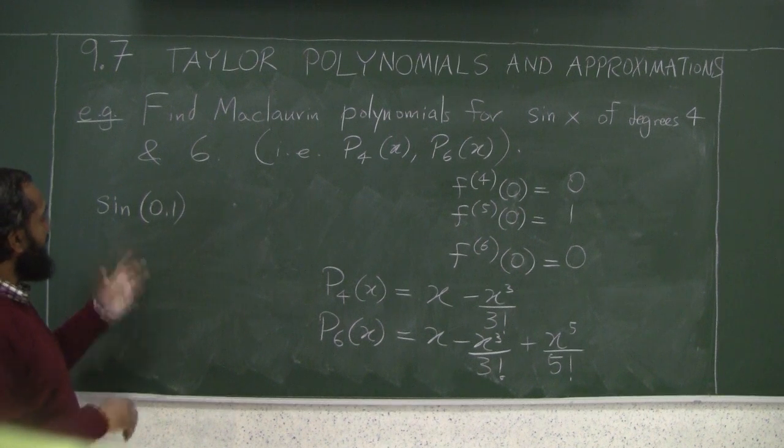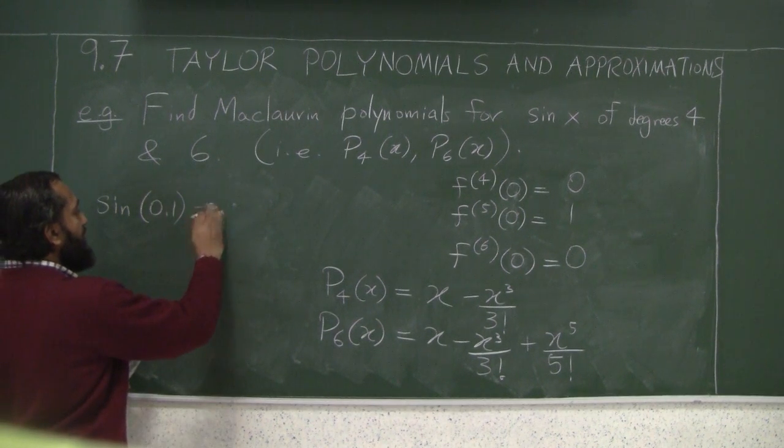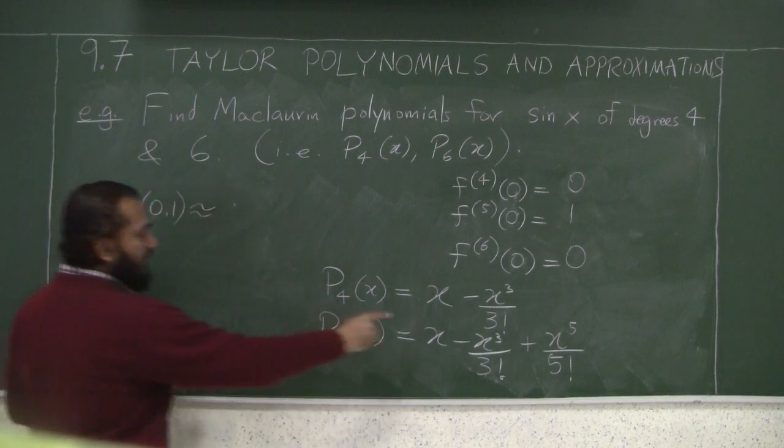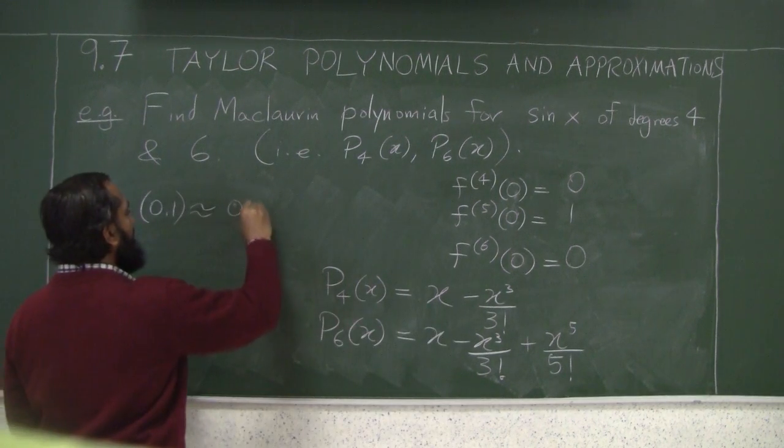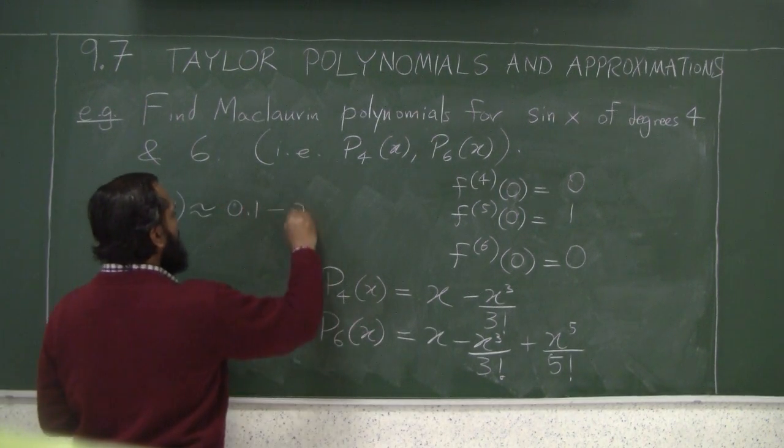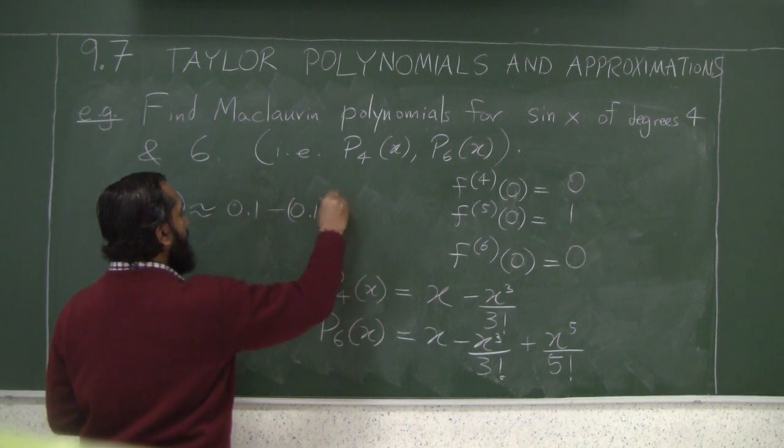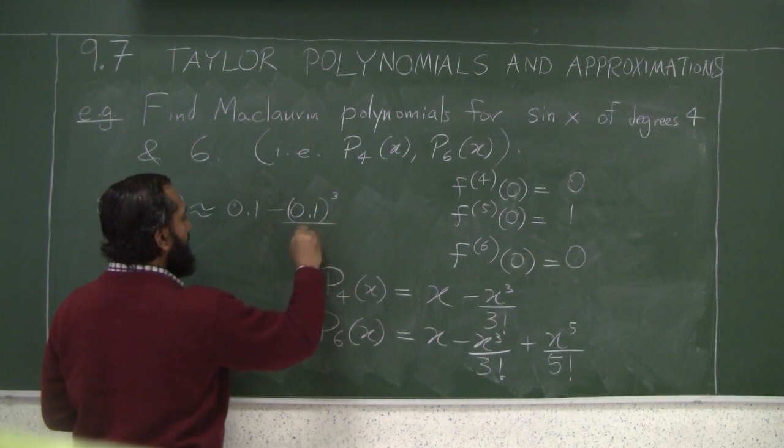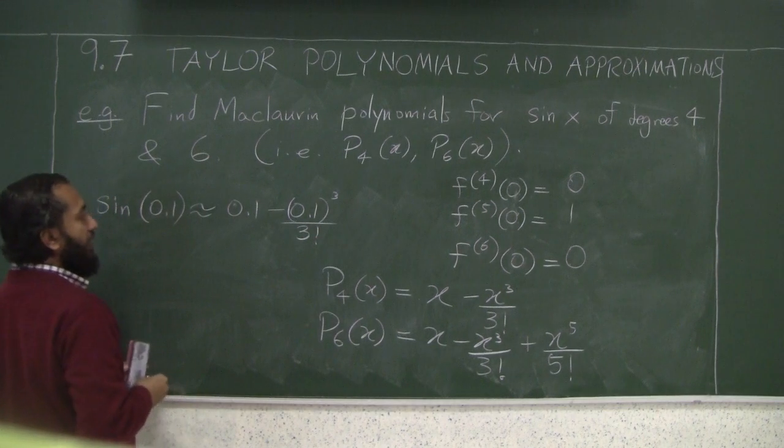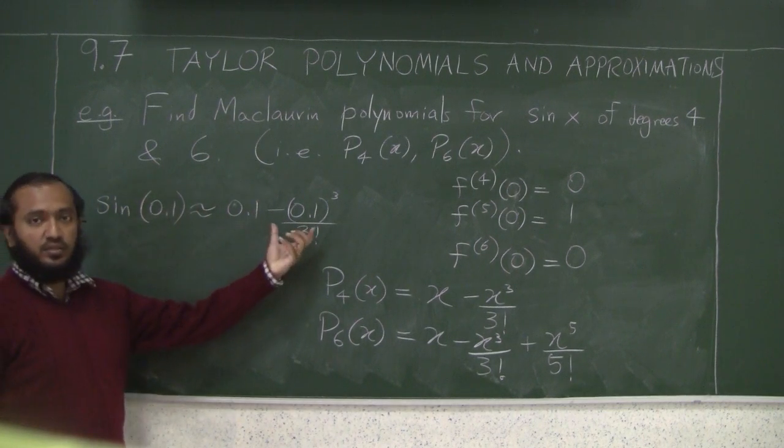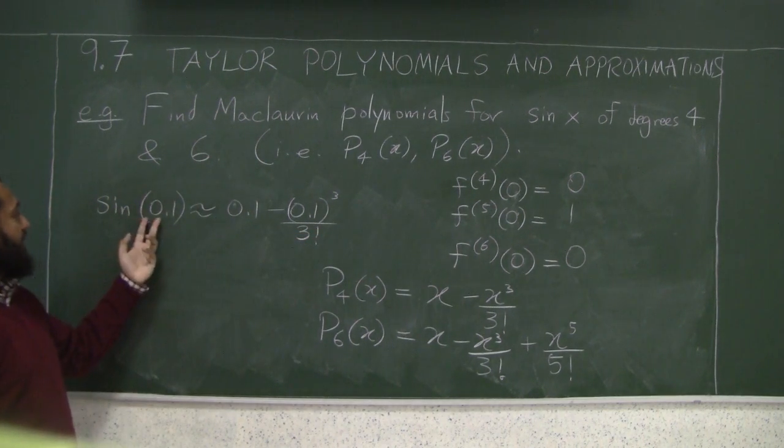So the nice thing now, you could compute it approximately - it's approximately 0.1 minus 0.1 cubed over 3 factorial. And these are very easy computations, so you get a very quick way of computing sine of 0.1.